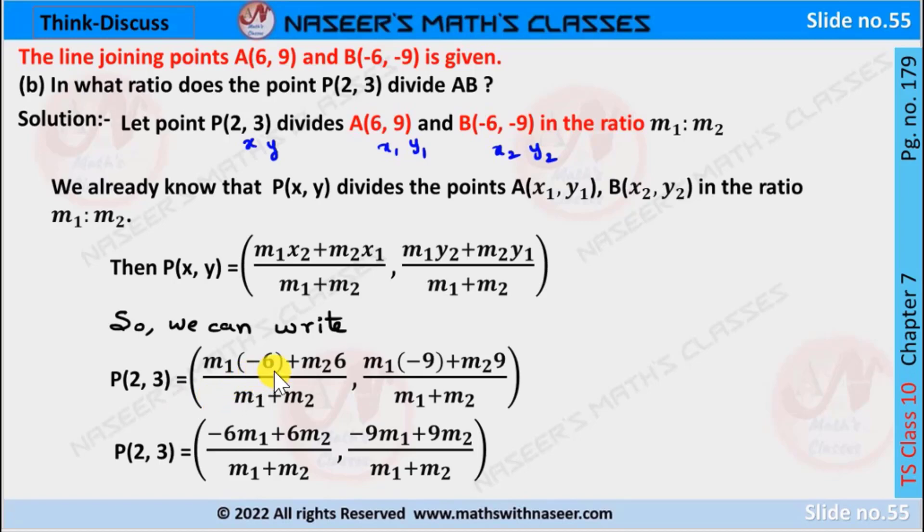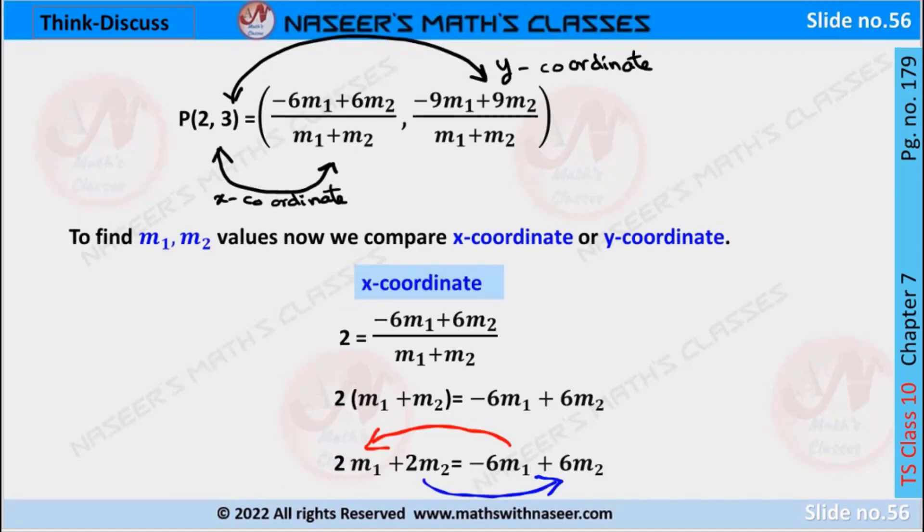m1 into -6 plus m2*6 by m1 plus m2, comma m1 into -6 is -6m1, m2 into 6 is 6m2, m1 into -9 is -9m1, m2 into 9 is 9m2. So now to find m1, m2 values we have to compare x coordinates or y coordinates.